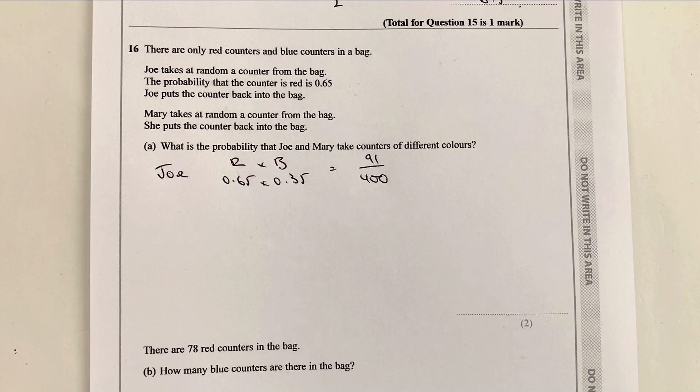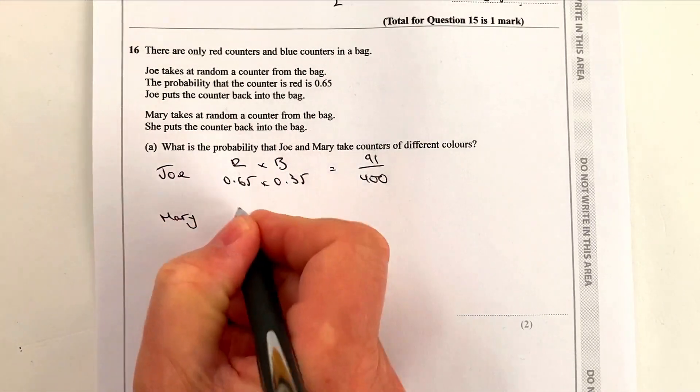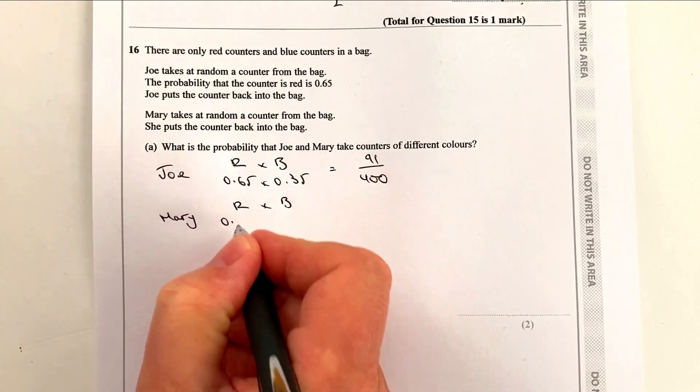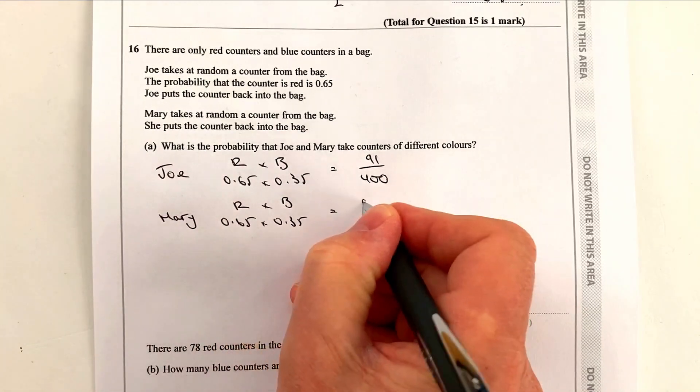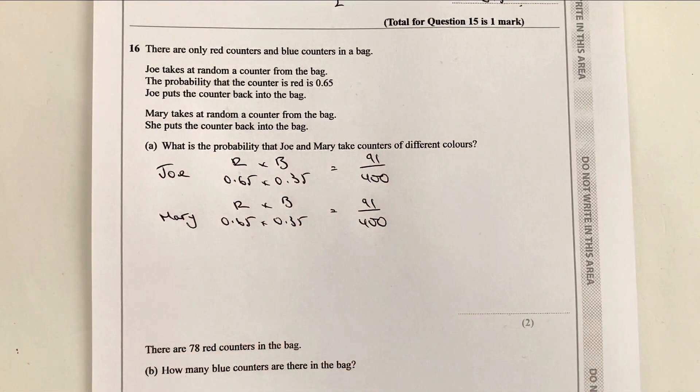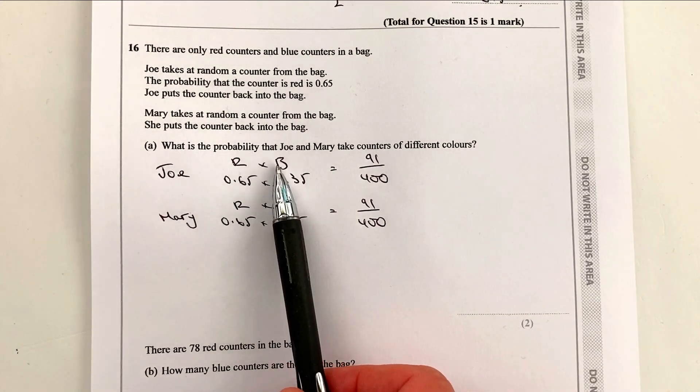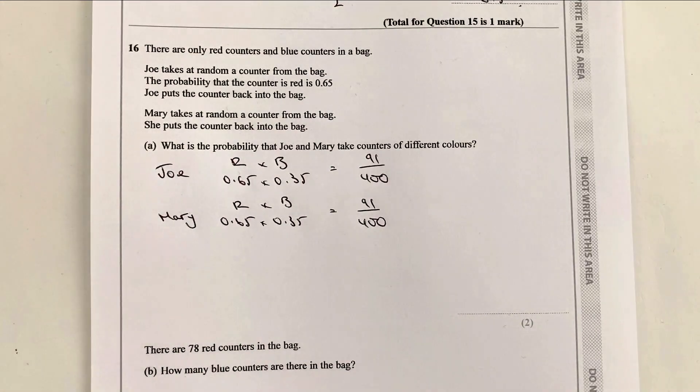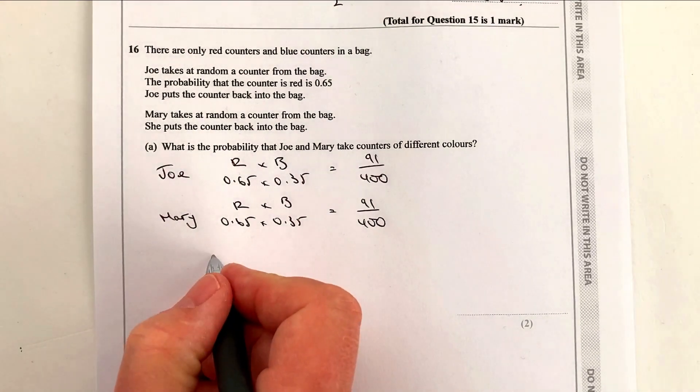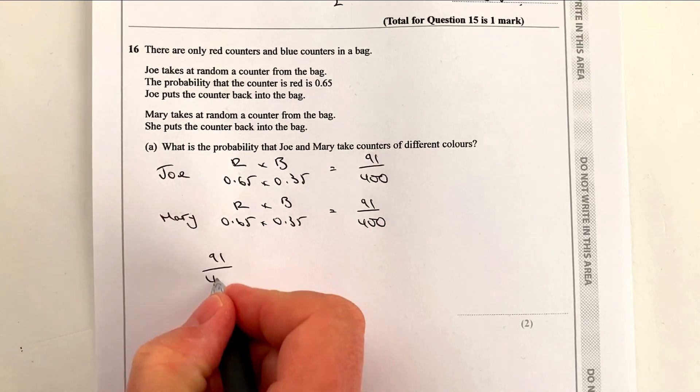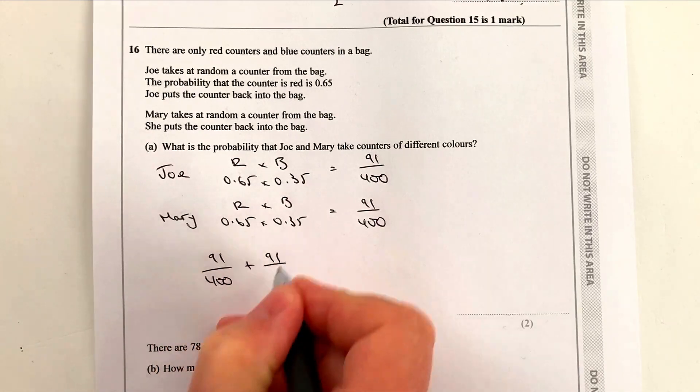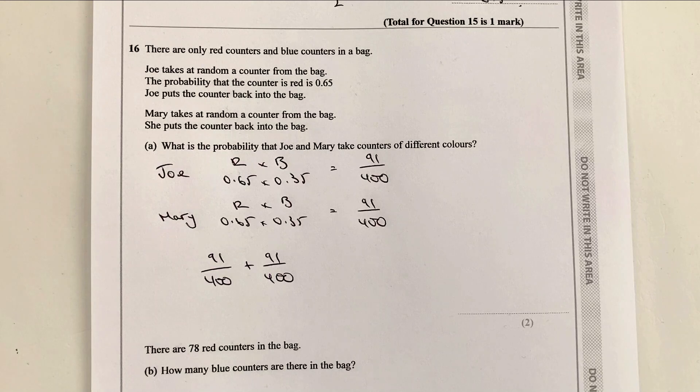Now again, notice I've not really carried on reading too much more of the question. Happily, Joe puts his counter back into the bag, so therefore the probability is going to be the same now for Mary. And she takes a random counter as well. So let's have a look at what Mary does. She has a choice of red or blue with the same probability, which is going to give you 91 out of 400. So what is the probability that Joe and Mary's counters are different colours? Well, you'll notice that I've used different colours here. One red and one blue. Probability is 91 over 400, same again with Mary.